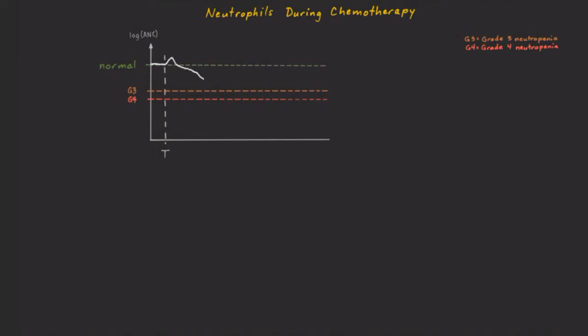Then the chemotherapy suppresses the new production of neutrophils for several days. It gets quite low, possibly even below what's considered grade 4 or severe neutropenia.